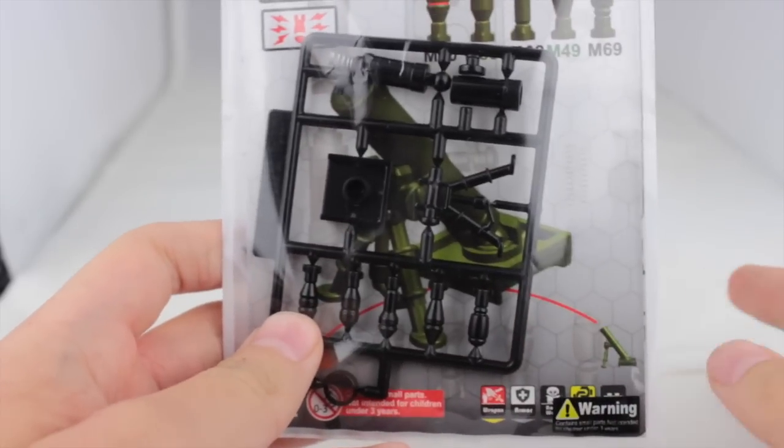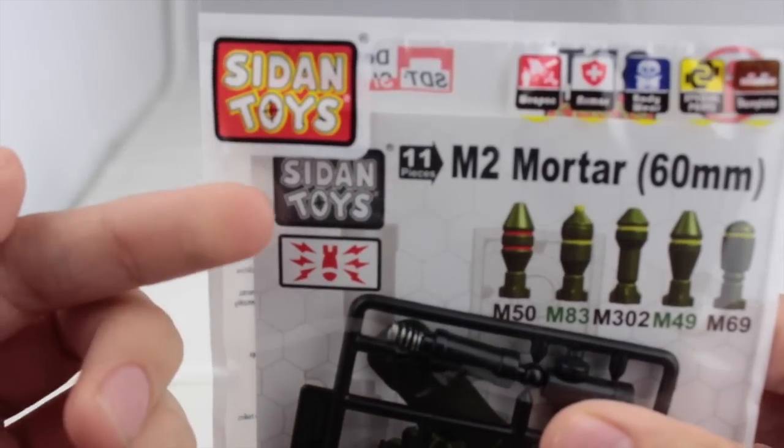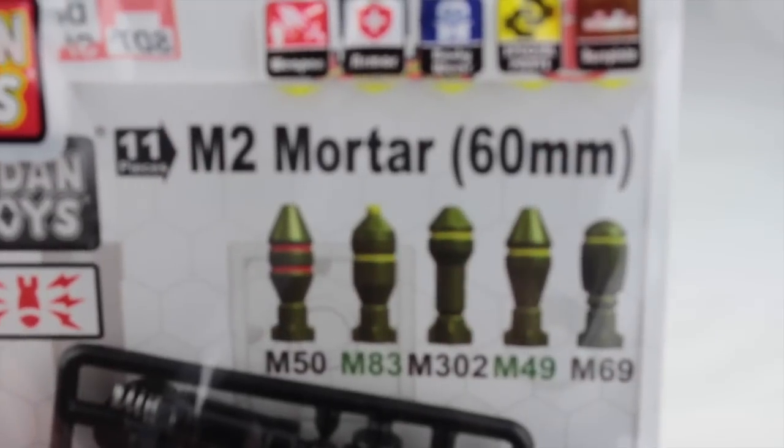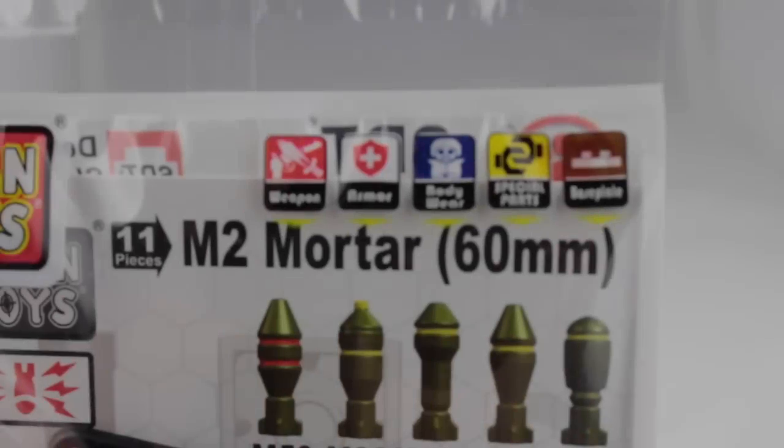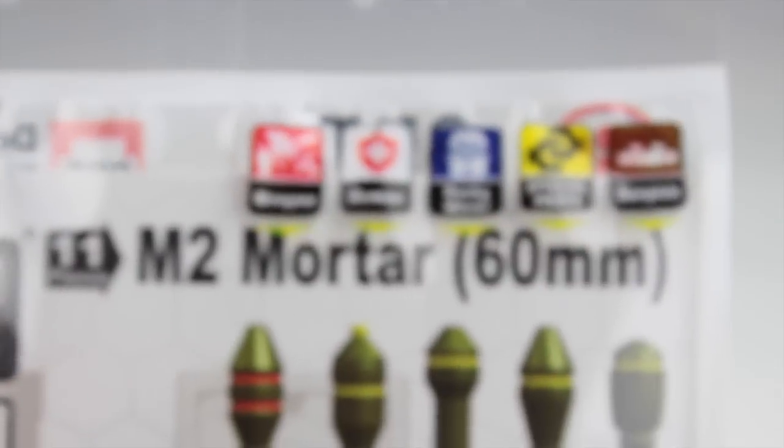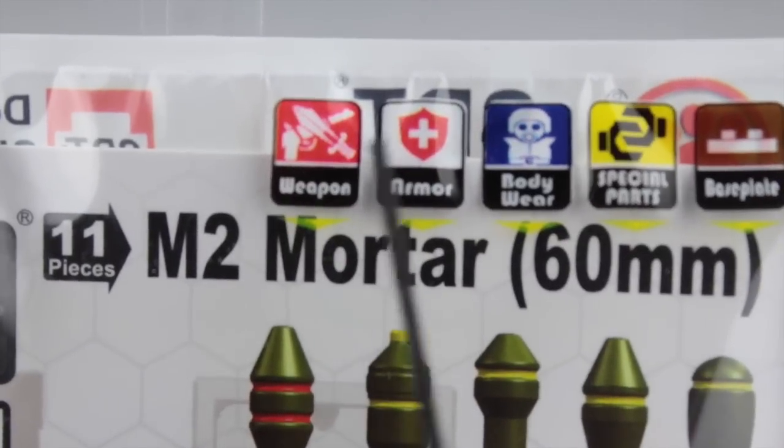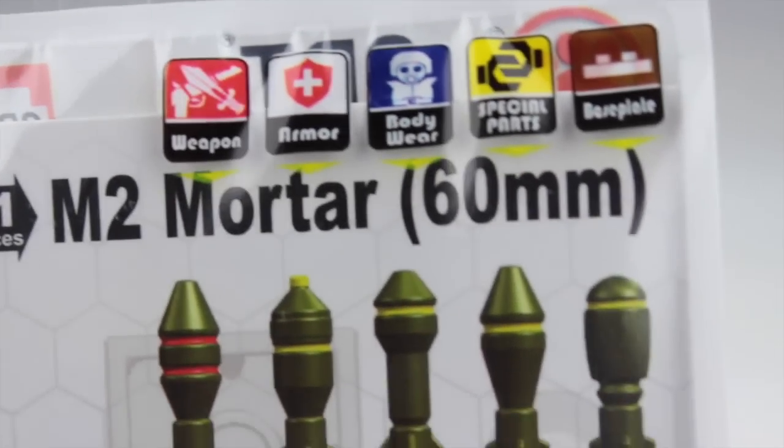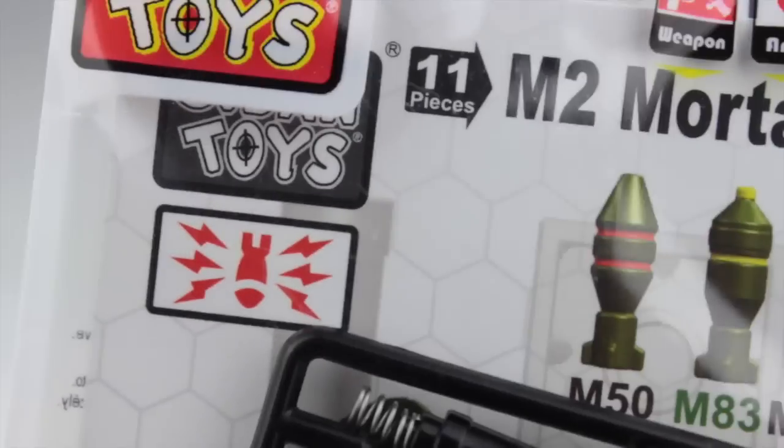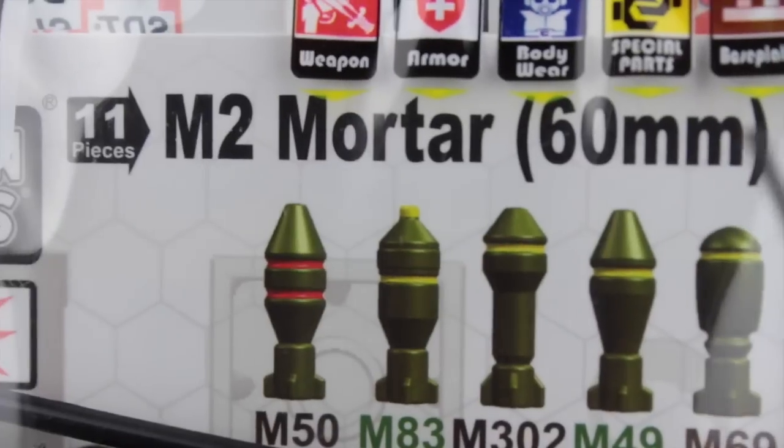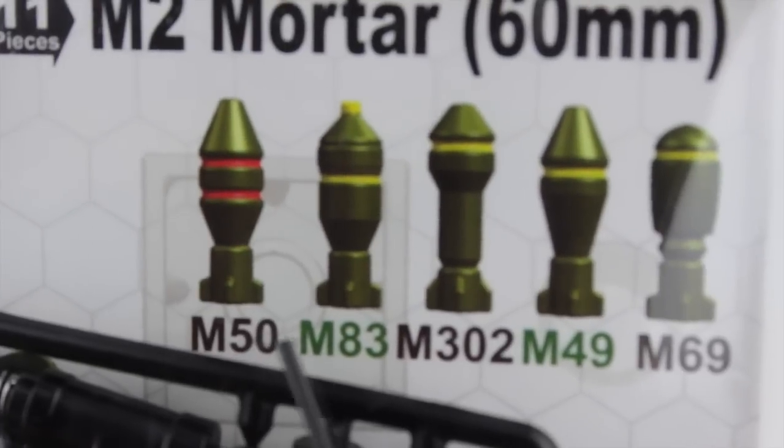So this is what we will be reviewing today. Let's go ahead and just start off with the packaging. So it says weapons, armor, body wear, special parts, and base plate. So basically it has all these things. There's just eleven pieces like it says right there. M2 Mortar, 60mm, and it tells you all the different shells it comes with.